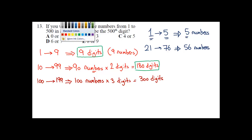Great. So now we are getting there. Now I know that from 1 to 9, I have 9 digits. From 10 to 99, I have 180 digits. And from 100 to 199, I have 300 digits.